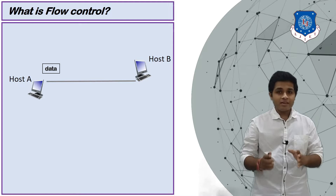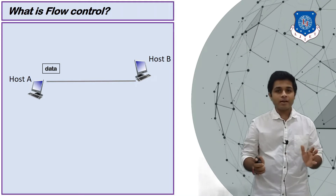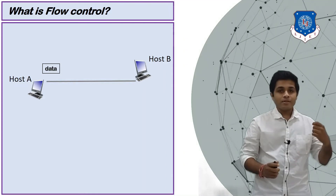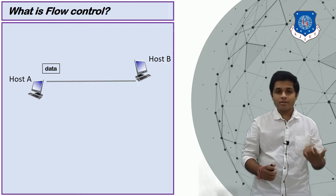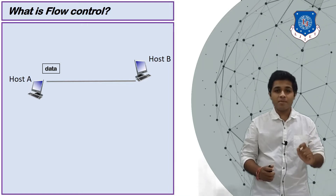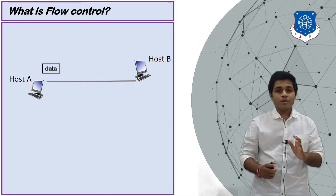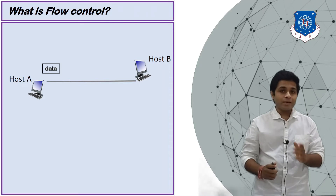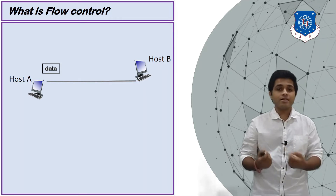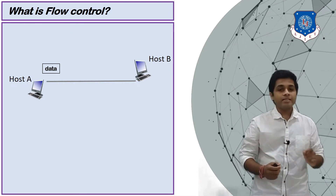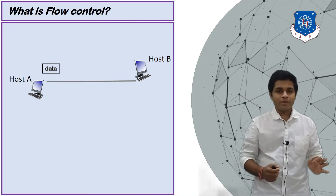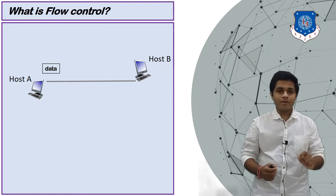In the internet, lots of devices are connected and they have different sending and receiving rates. If a sender is sending data at a rate the receiver cannot handle, there will be miscommunication and problems in the network. The solution is that the sender should send data at the rate at which the receiver can receive it — for example, at 2 Mbps. This concept is known as flow control.